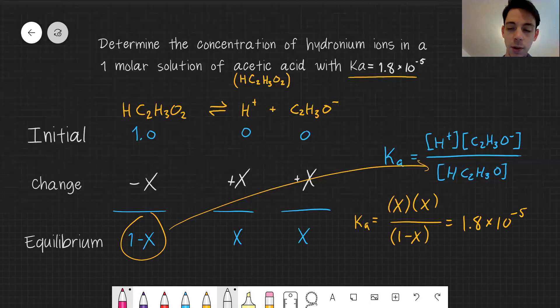I see this as a weak acid. The Ka value is very low. It tells me that the numerator is pretty small. In other words, for weak acids, only a very small portion of the acid actually dissociates.